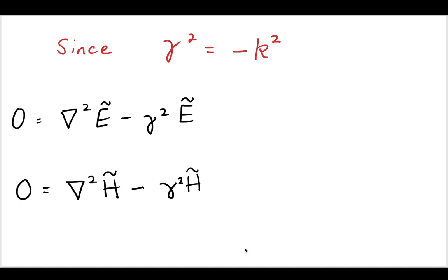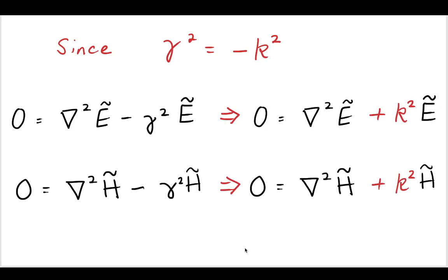Now, because of this, we can redefine our wave equation. We can rewrite it like this, where we are now using k instead of gamma for our wave number propagation constant.